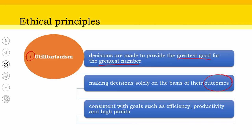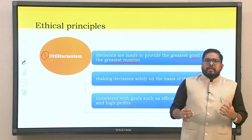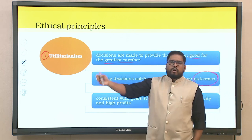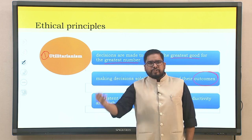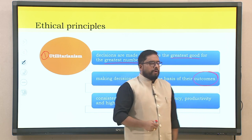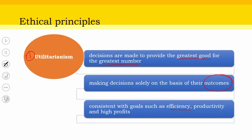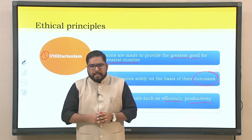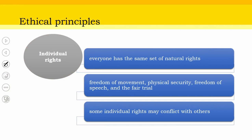We are not concerned about what the means is. We are looking into a philosophy where the end is important, and that end should benefit a larger number of the population, the larger group, the larger cohort in the organization. It is consistent with the goals such as efficiency, productivity and high profits. If you are trying to be productive for the maximum number of people, it is adding to your efficiency and productivity — this is where utilitarianism as an ethical principle takes its first place.